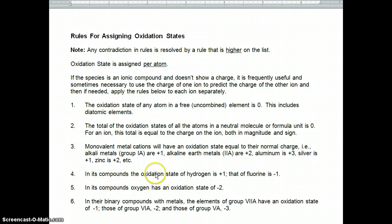Hydrogen is plus 1 in compounds, and fluorine is negative 1. Rule 5 says oxygen is negative 2. Rule 6 says that in binary compounds, the non-metal has an oxidation state equivalent to the charge as if it gained electrons. For example, nitrogen would be negative 3 if it was combined with a metal, like calcium nitride.